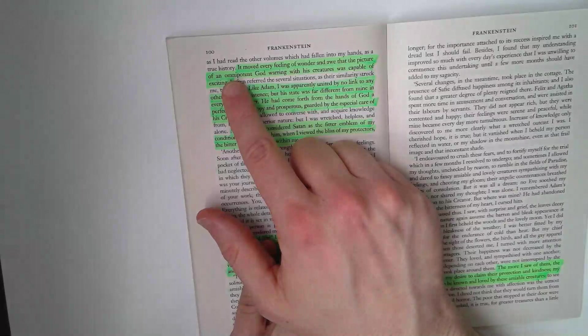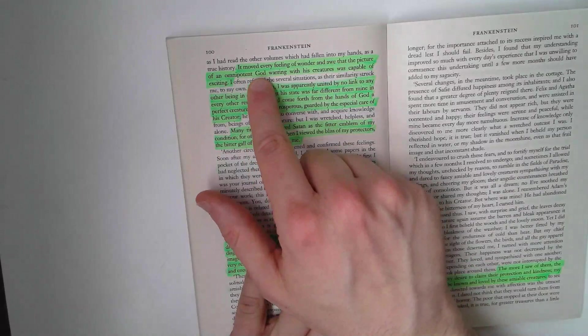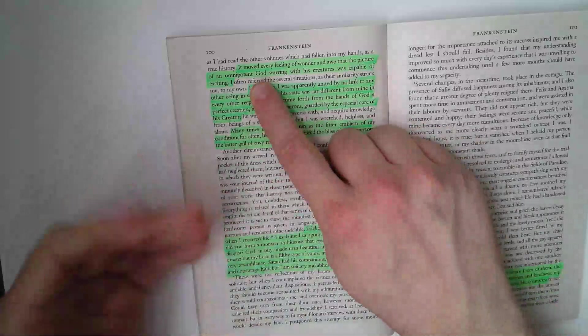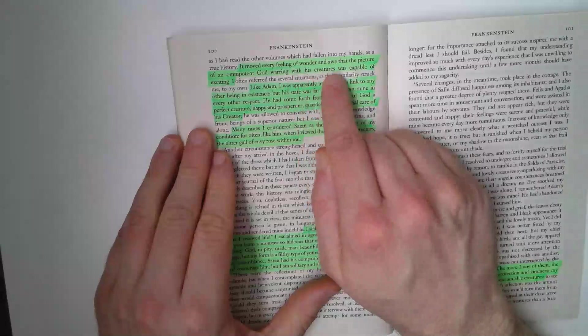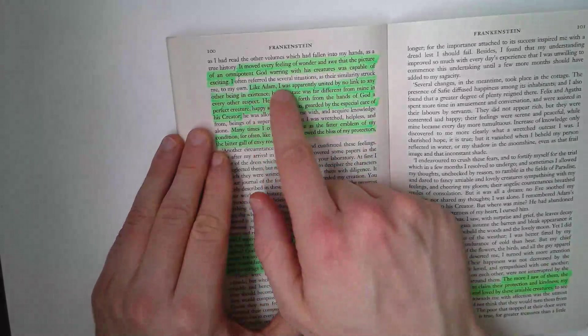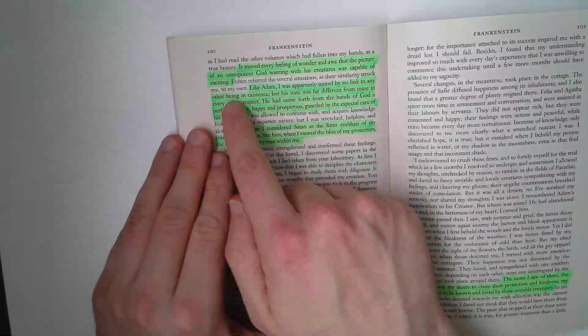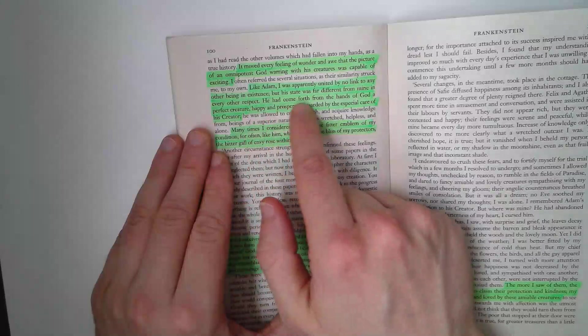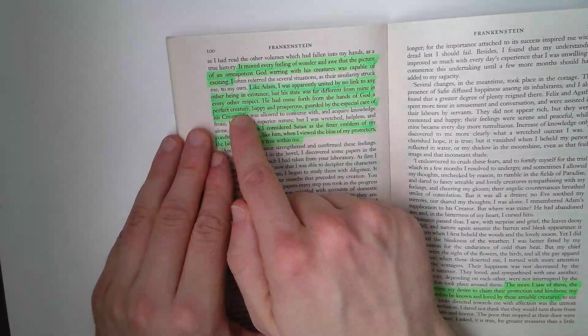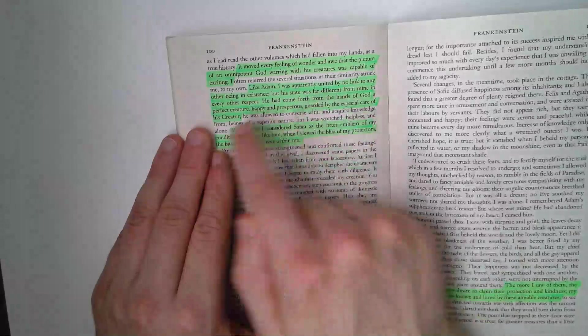Of course, this is what the creature has seen, an omnipotent God. Victor, to him, is omnipotent or he believes he's omnipotent. He's had the power to create the creature and he wars with his creatures, as Victor does. Like Adam, I was apparently united by no link to any other being in existence, but his state was far different from mine in any other respect. He had come forth from the hands of God a perfect creature, happy and prosperous, guided by the special care of his creator.